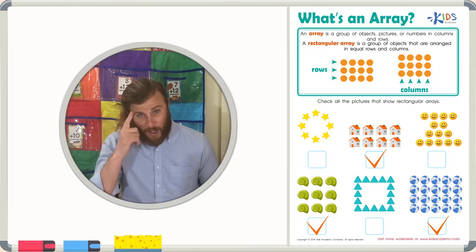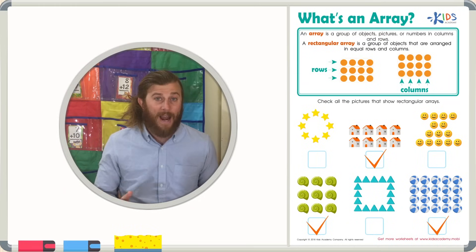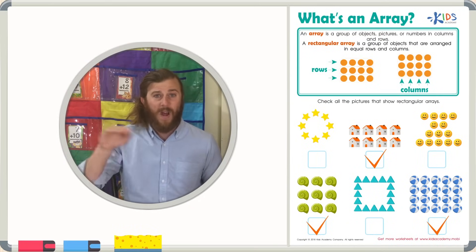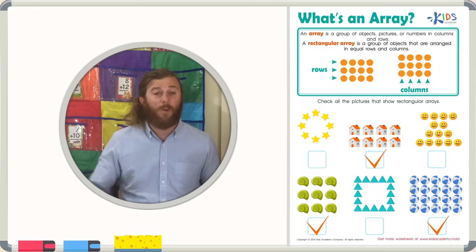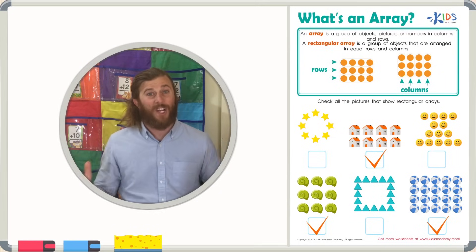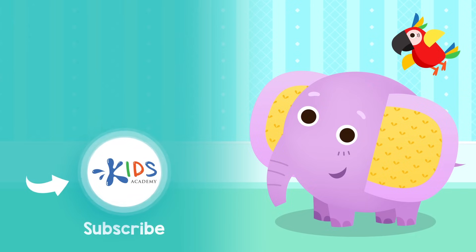Remember, boys and girls, when you're looking to see if an object is an array or not, make sure it has an equal number in each row and an equal number in each column. Thanks for watching — we'll see you next time! Subscribe to our channel to stay updated on new videos. Find links to our apps in the comments below. Bye-bye!